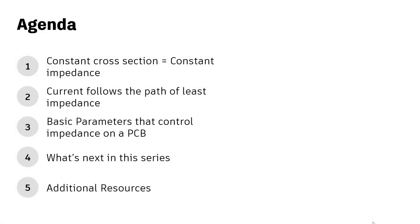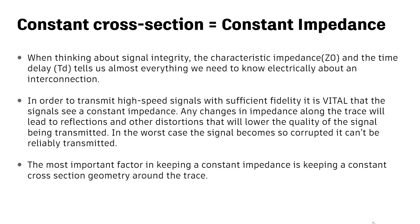In this video, I'm going to talk about some key points. First, we want to talk about the importance of constant impedance. Then we're going to talk about how current follows the path of least impedance, what parameters we have in the PCB that we can use to control and achieve a specific impedance in our boards, what's next in this series, and then some additional resources if you want to find out more. So let's start off with the first section.